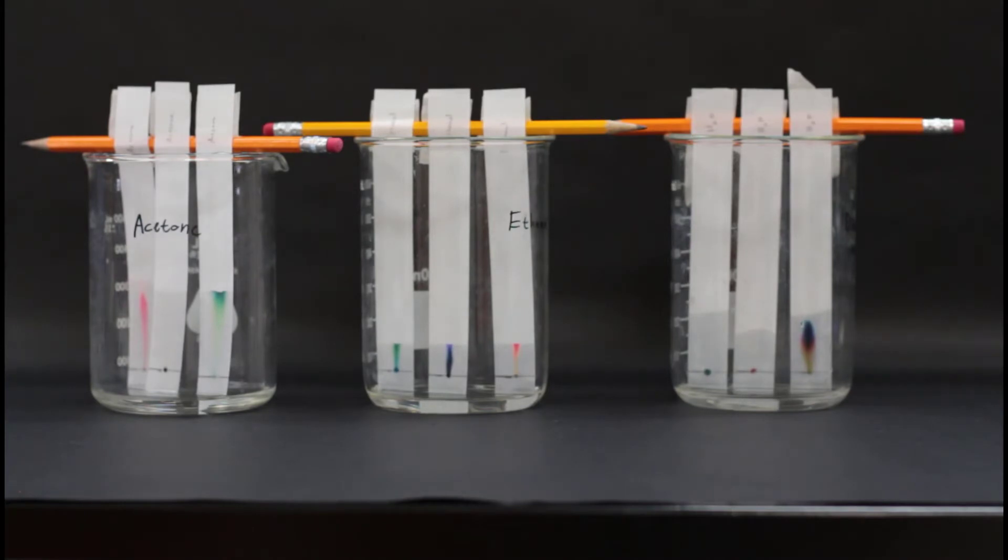For the discussion section, you'll create a table and determine the RF value of each pigment for each solvent. That's how far that substance travels with the solvent. Then you'll identify the polarity of each solvent that we use. We'll be using three of them. I'll show you how to determine the RF value at the end of this video.